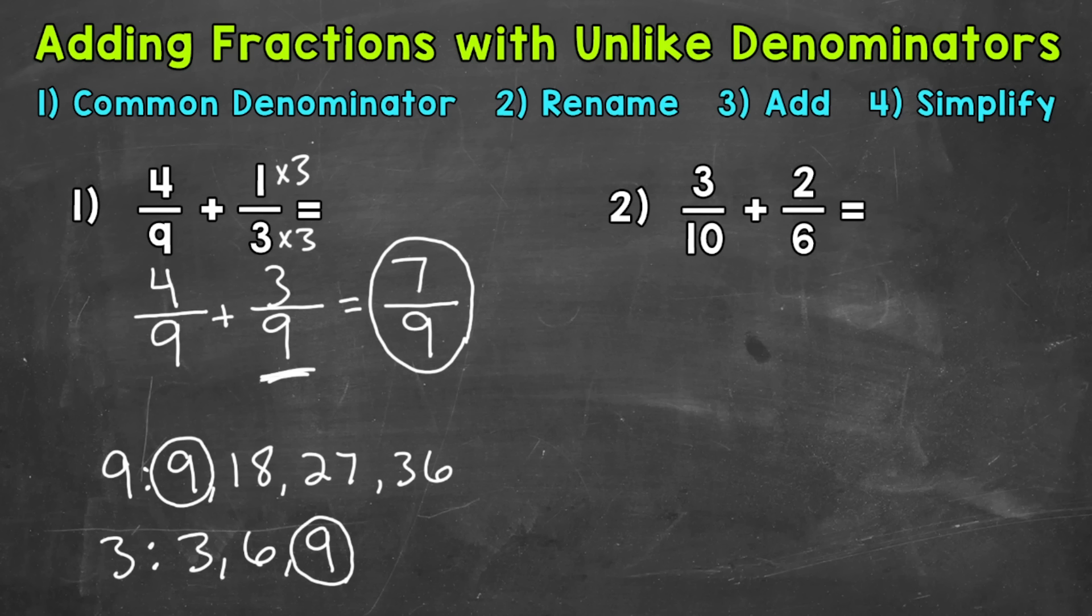Let's try another one and move on to number 2, where we have 3 tenths plus 2 sixths. So the first thing that we want to do, we need to find a common denominator. So let's write out the multiples of 10 and 6. We'll start with 10. So 10, 20, 30, 40.